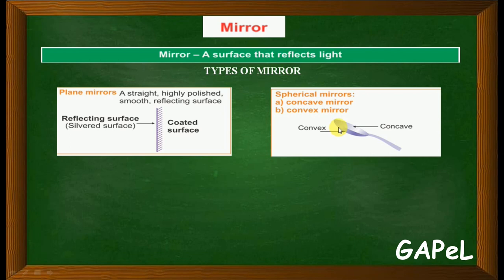Ray of light reflects the light. So about that reflection, refraction, everything we will see in detail. So, plane mirror - what is a plane mirror? It is a straight, highly polished, smooth reflecting surface.